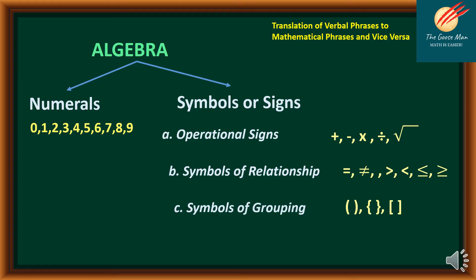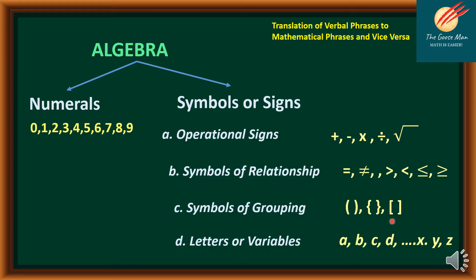Then we have symbols of grouping such as parentheses, braces, and brackets. And finally, we use variables to represent the unknown. We may use the letters A, B, C, and so on, through X, Y, N, and other variables.